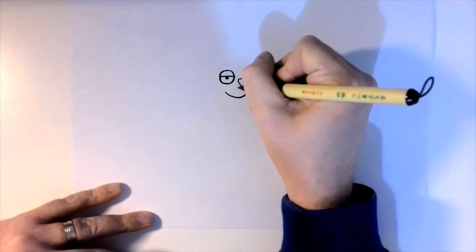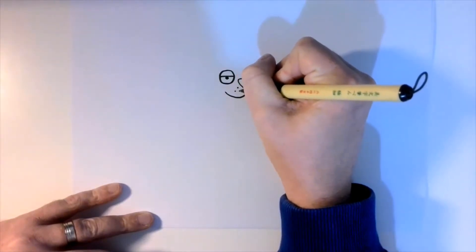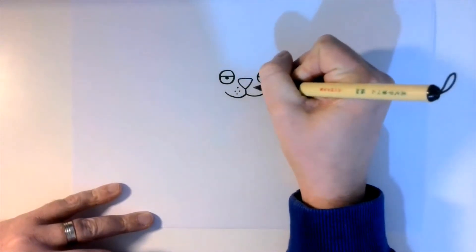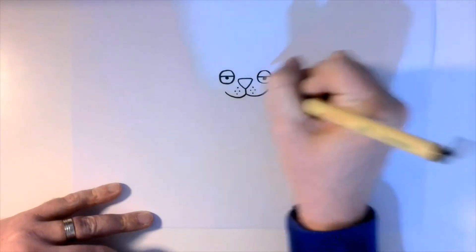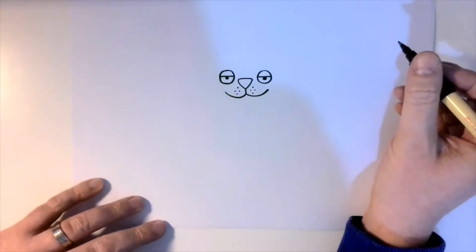Now cats have whiskers, so what I'm going to do is put some dots in here, either side. But I'm not going to add the actual whisker lines yet, I'm going to do that a little bit later.